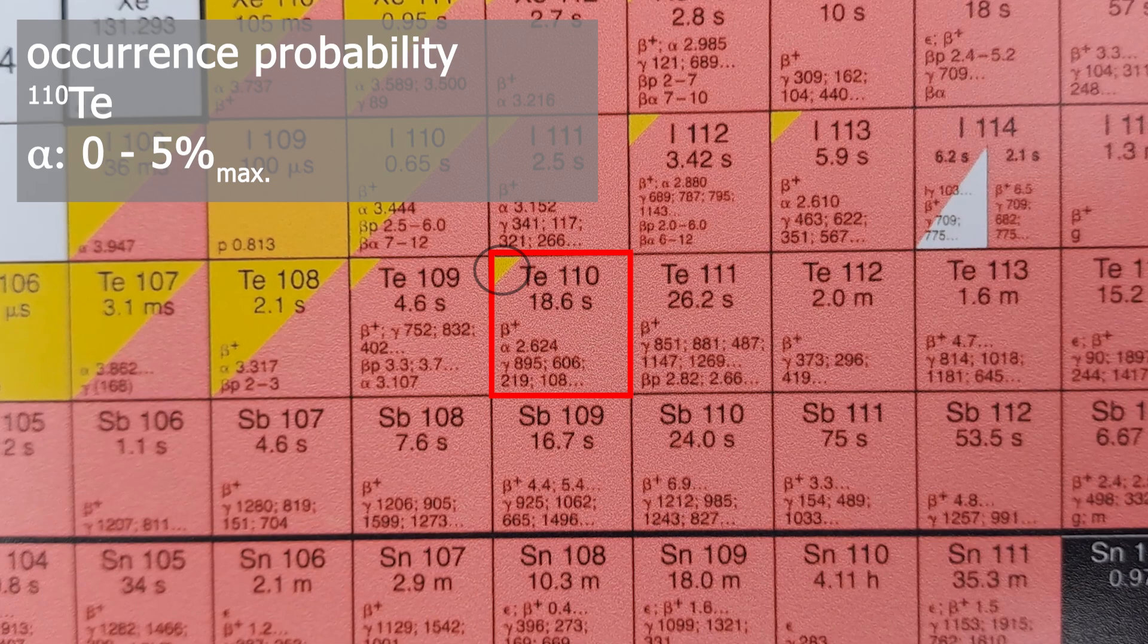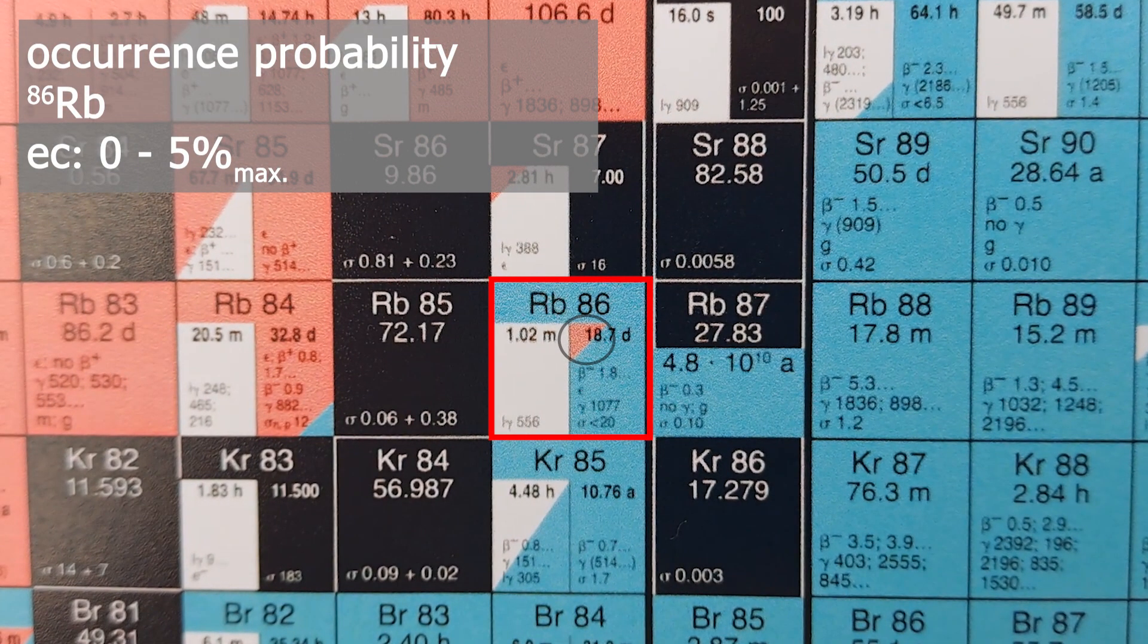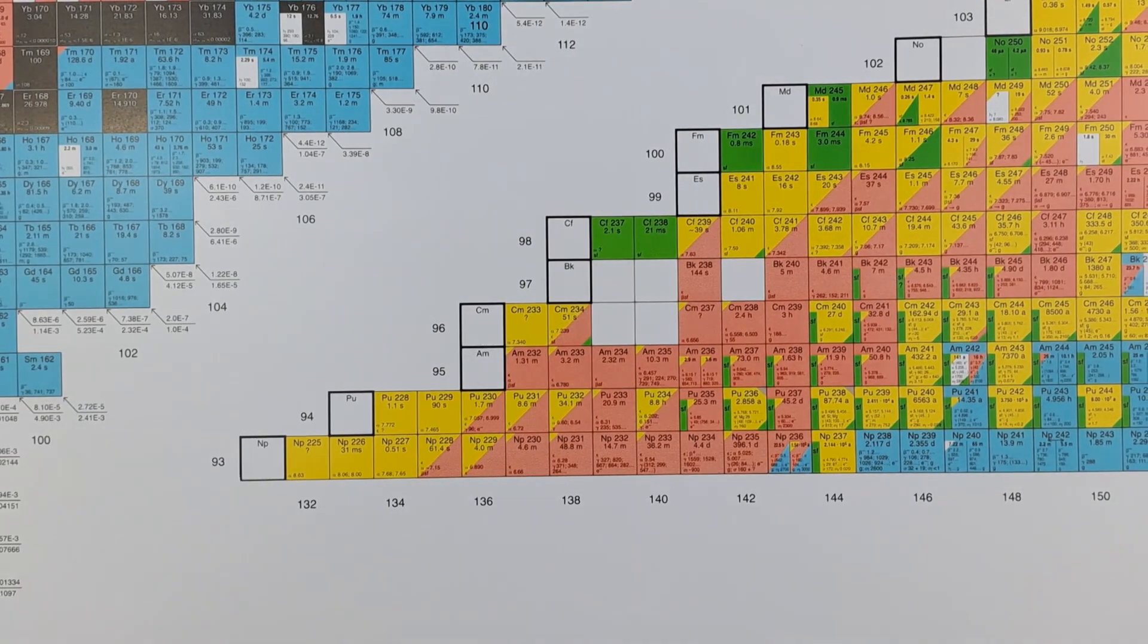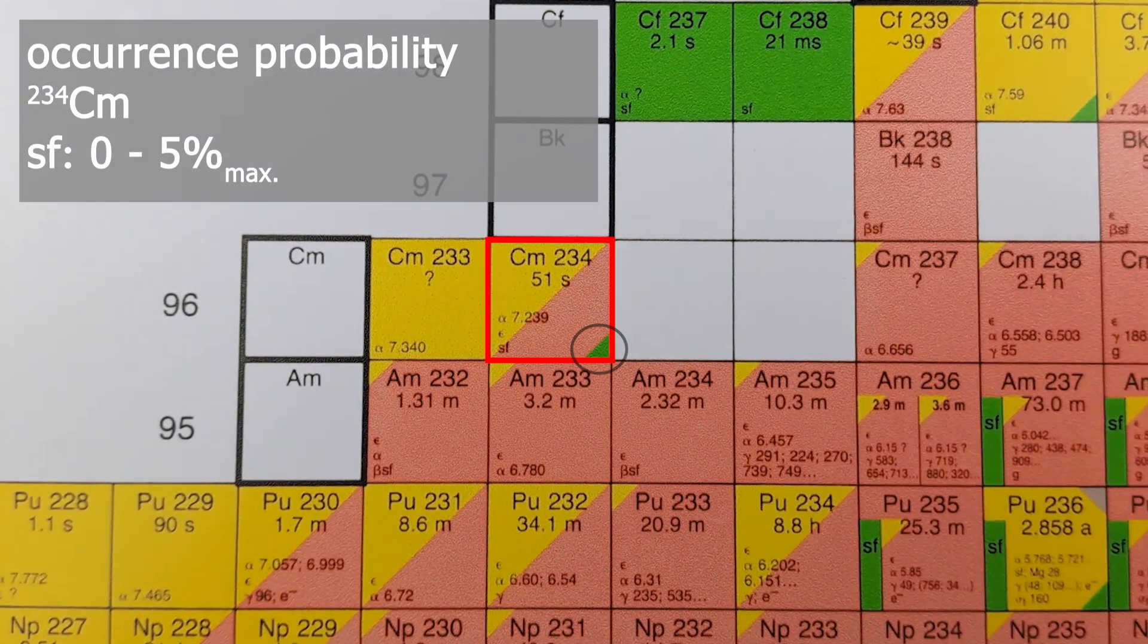For example tellurium 110 has a low probability of the alpha decay, or rubidium 86, the electron capture there has such a low probability. Or curium 234, spontaneous fission in green has this low probability. A vertical division of the tile will be discussed in the next part.